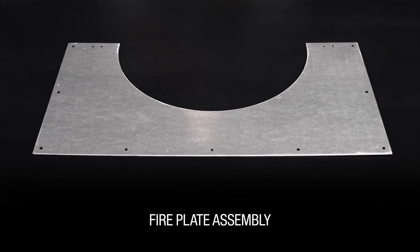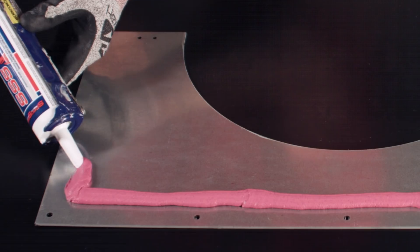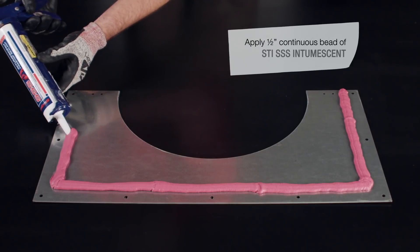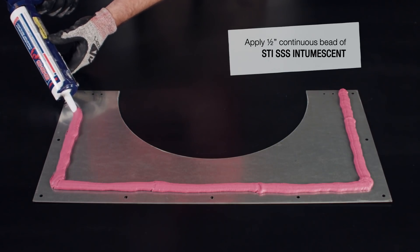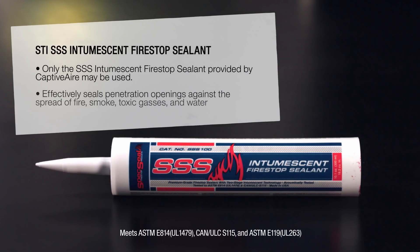You must then install fireplates on the underside of the floor or ceiling. Begin by applying a half inch continuous bead of STI triple S intumescent around the edge of the first fire plate.